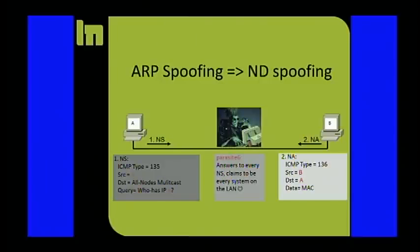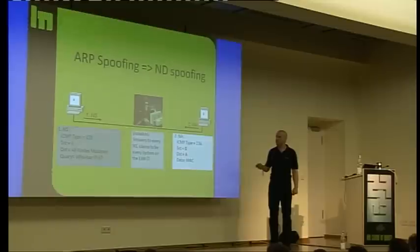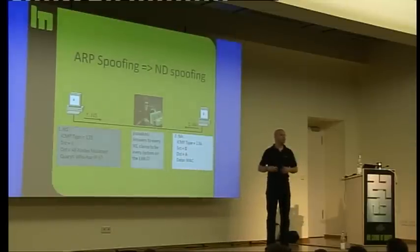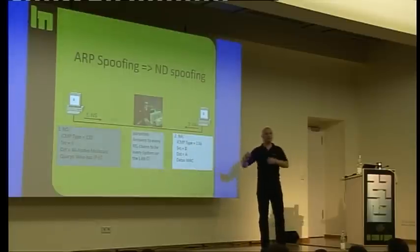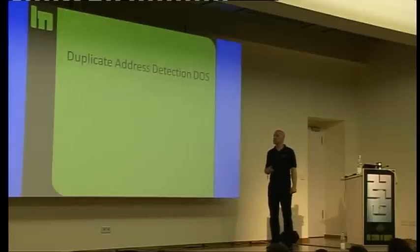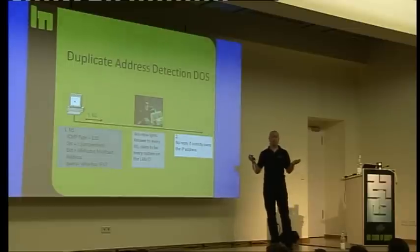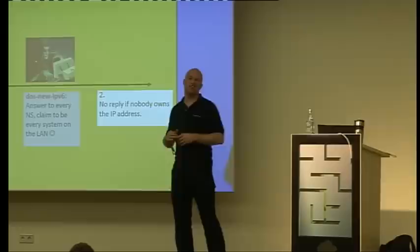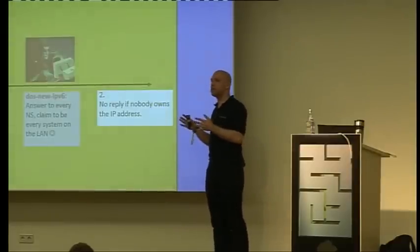Instead of sending an ARP request, you send a neighbor solicitation. The target system sends a neighbor advertisement. You can do the same thing as you can do with ARP. You can spoof that. There was a tool which sends neighbor advertisements for every neighbor solicitation which is sent and get all the traffic to you.